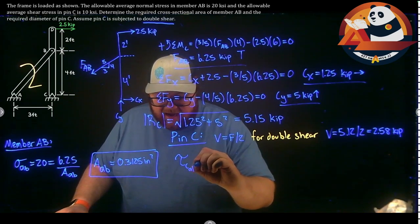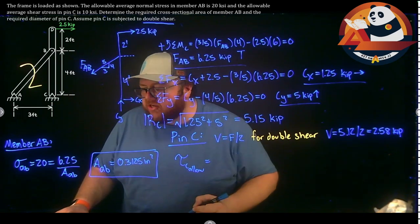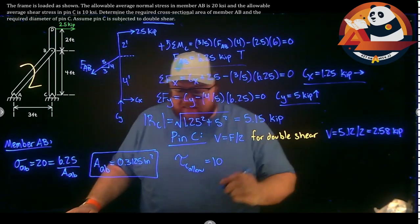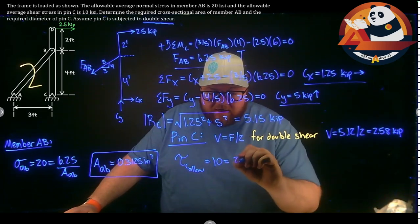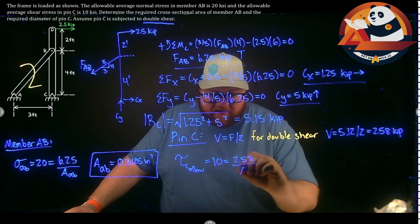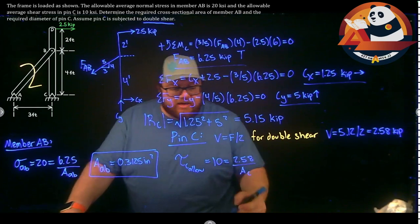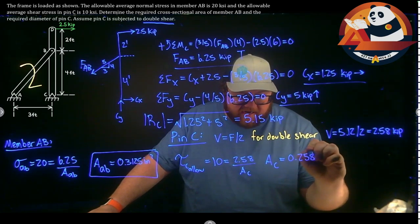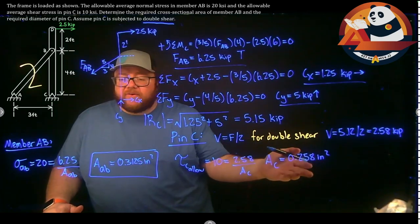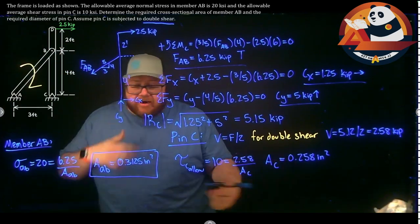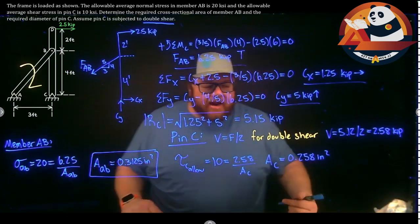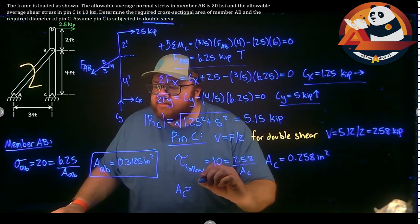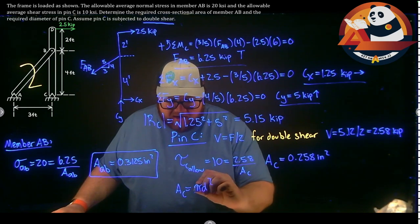The allowable shear stress τ_C equals 10 KSI, the same way 20 KSI was given for member AB. Writing τ = V / A: 10 = 2.58 / A_C. Solving gives A_C = 0.258 inches squared. That's not quite the final answer since we were asked for the diameter of pin C.